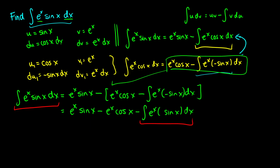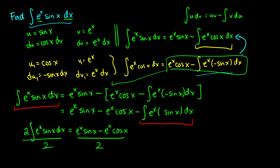Moving the integral term to the other side, we get two times the integral of e to the x sine x dx equals e to the x sine x minus e to the x cosine x. Now if we want to get our solution, we just divide the entire thing by two. The twos on the left cancel, so we've found that the integral of e to the x sine x dx equals e to the x sine x minus e to the x cosine x, all over two.